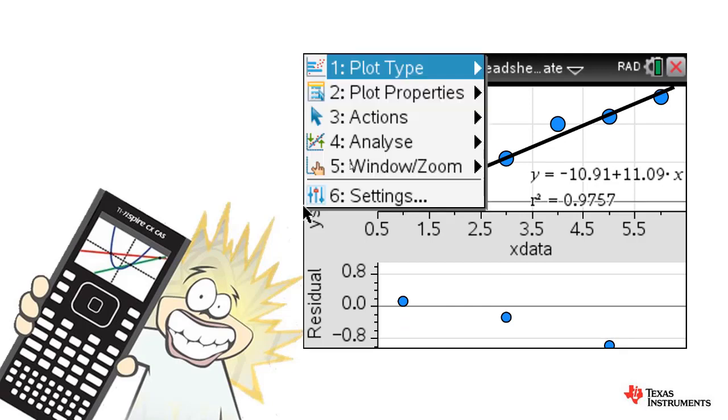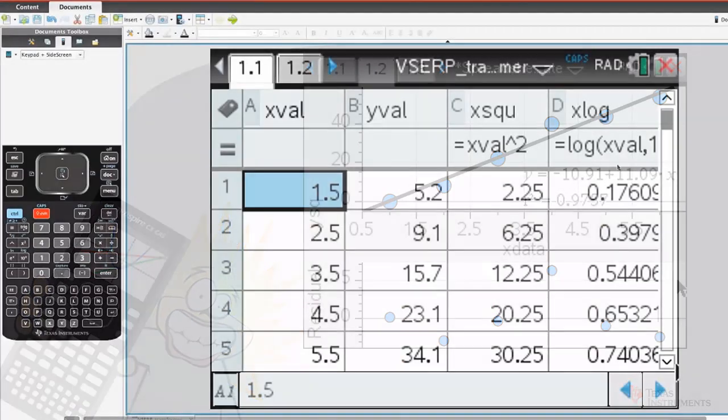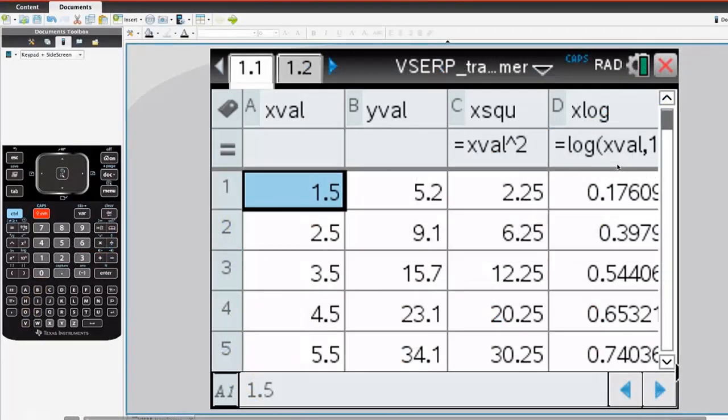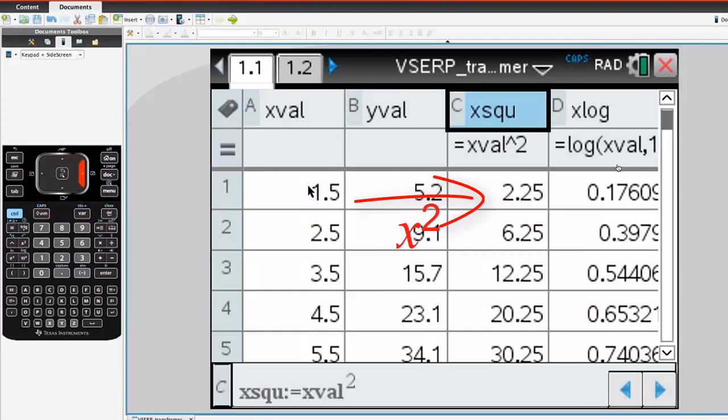We'll start with the Data Transformation Template. In this one, there's a list of X values and Y values. We have some numerical bivariate data. And then some formulas and variables have been established for squaring or transforming these variables.